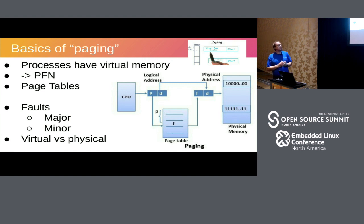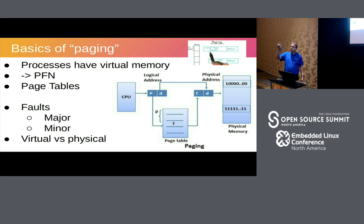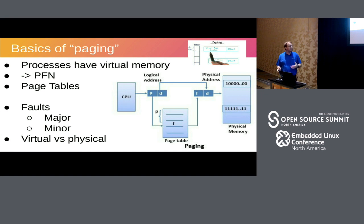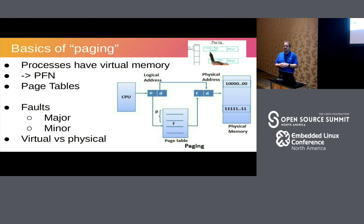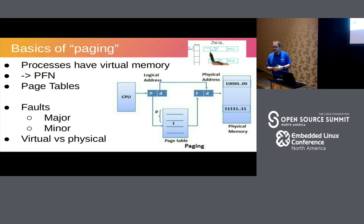When a process starts up, the page tables are empty. As soon as the process runs and references memory, the processor looks at the page table to find which physical frame number belongs to that address. When the page table is empty, we have a major page fault — the OS needs to provide the data. This can be a load from disk. We may have mapped an executable or data file from disk, but haven't populated it because we do on-demand paging. So when you access a new page of your binary, the system finds the page on disk, reads it into memory, and fills the page table. This is a very laborious process going on continuously behind the scenes.